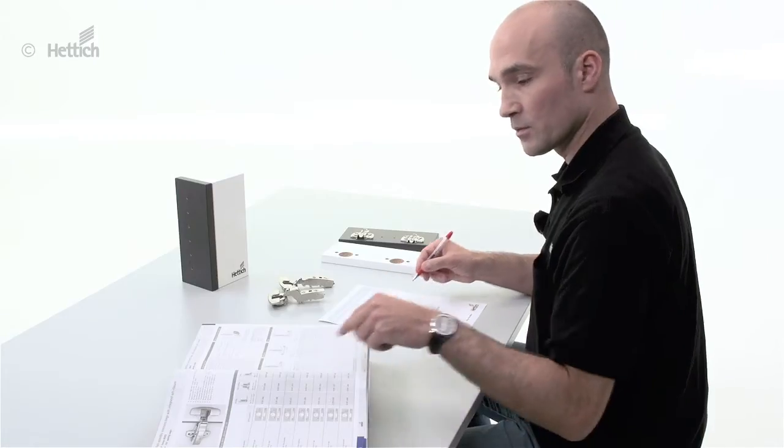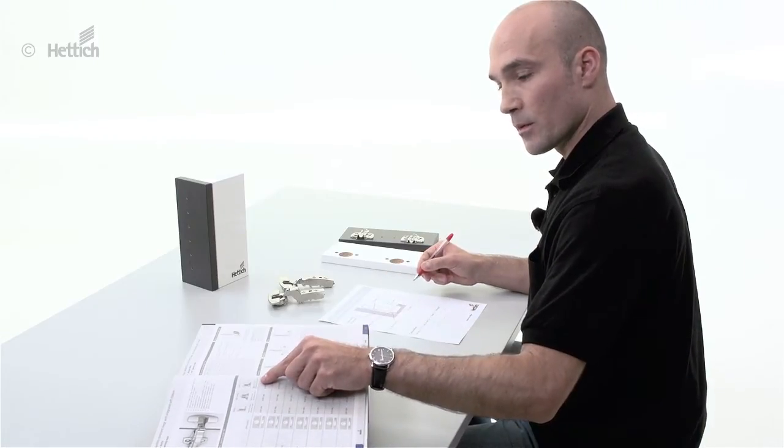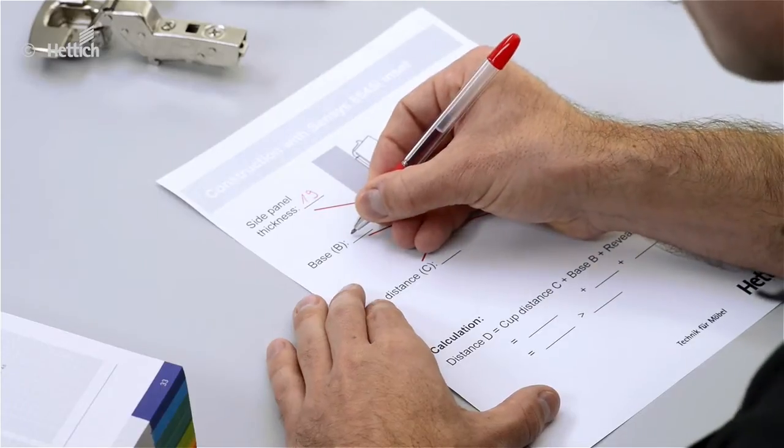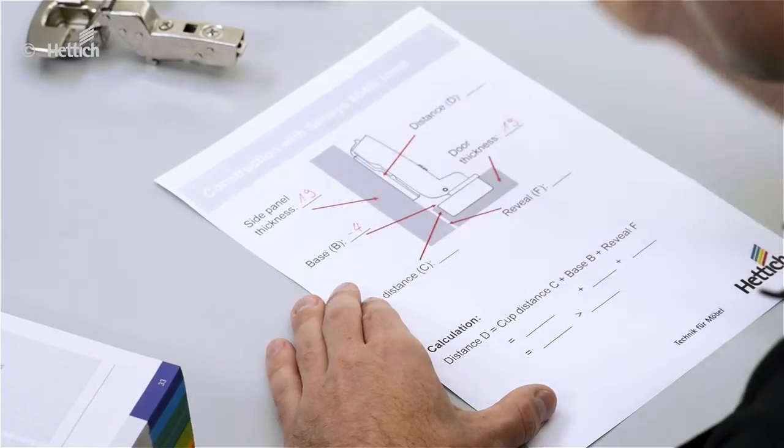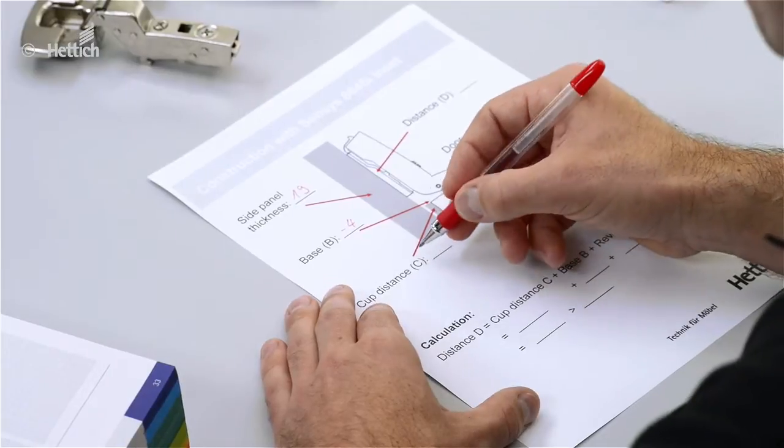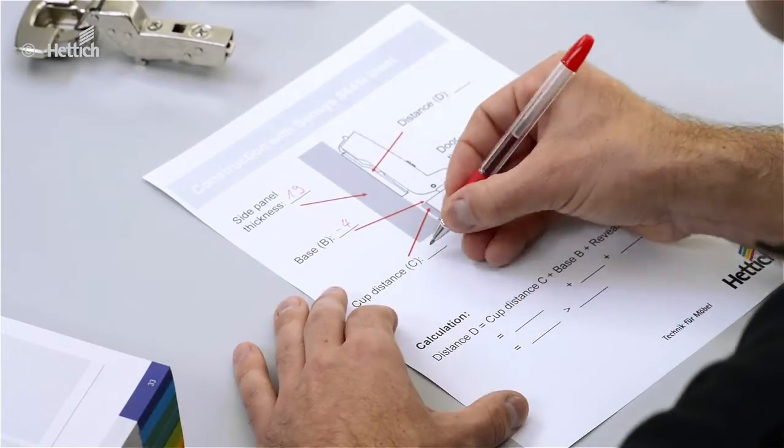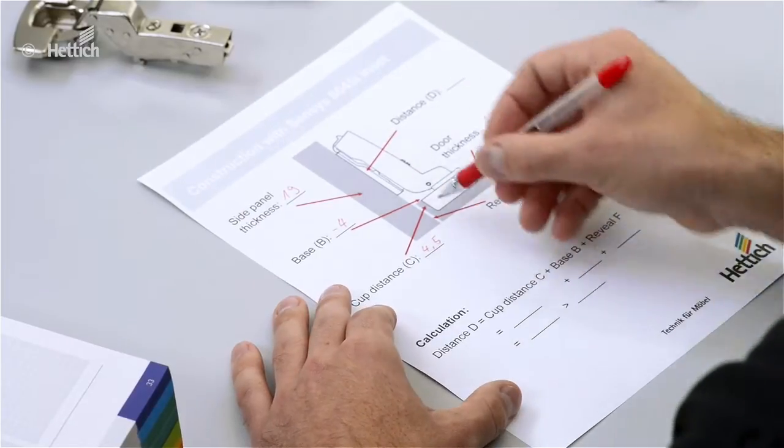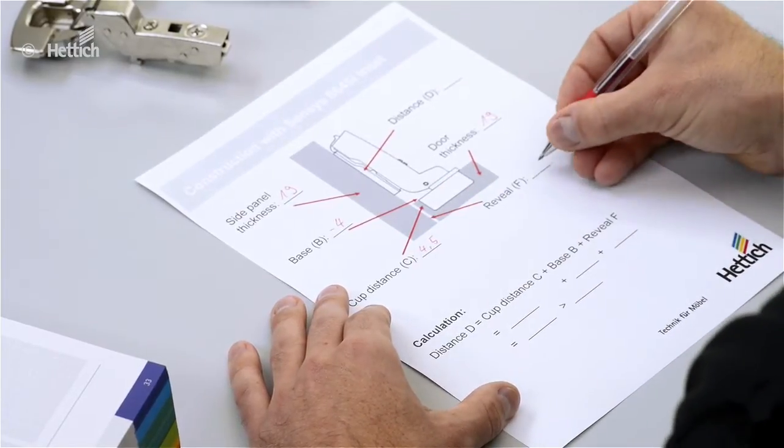We have the base B, the value of minus 4 millimeters, which you can see in the catalog. The cup distance C is 4.5 millimeters in this example and the reveal is 2 millimeters.